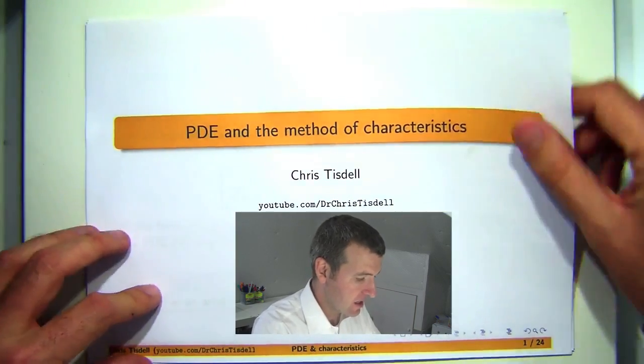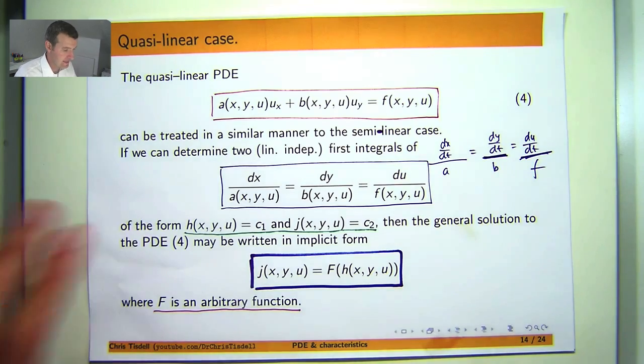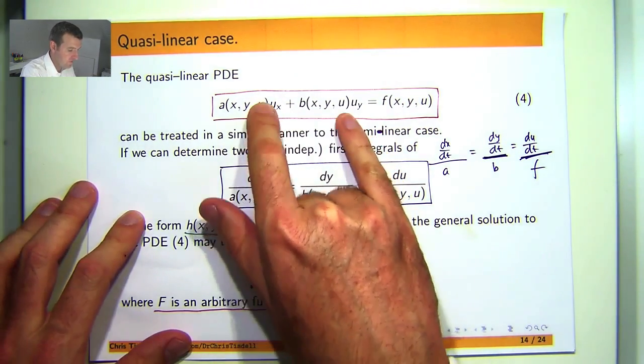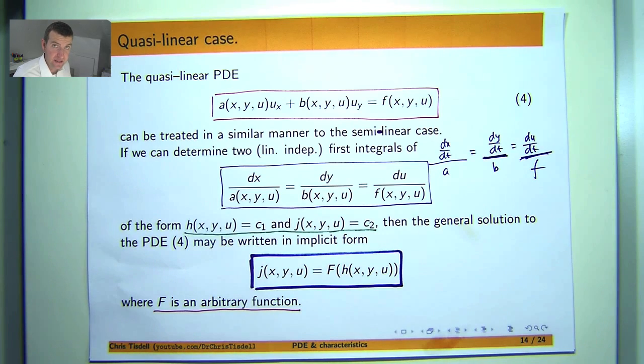Now in previous videos I have shown you how to solve semi-linear problems where the coefficients here do not depend on u. I've also done a quasi-linear problem, a simple one called Berger's equation which has applications to fluid mechanics. But the example that I'm going to give today is a little bit more difficult.